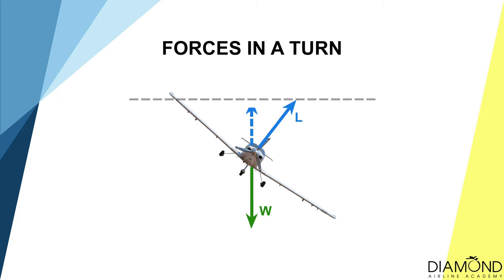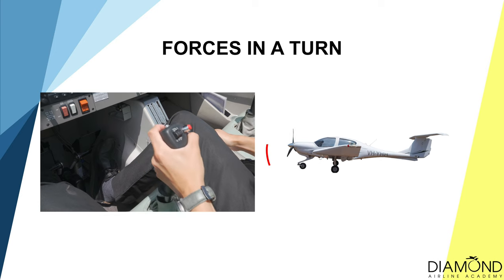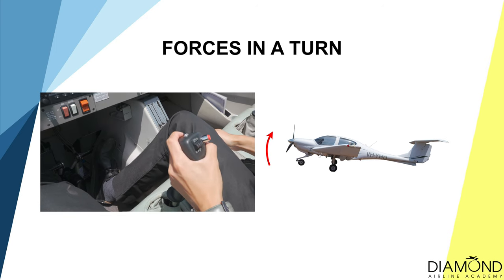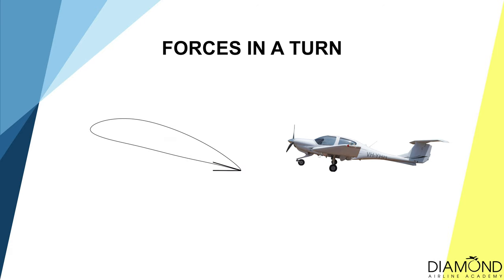If we extract the vertical component of lift, we can see it is insufficient to equalize the weight — the vertical component of lift is less than weight. As a result, the aircraft would start to lose altitude, which is not what we want. To fix this, we apply a bit of back pressure on the control stick to increase the angle of attack on the main wing and increase the production of lift. When total lift is increased, the vertical component of lift increases as well.